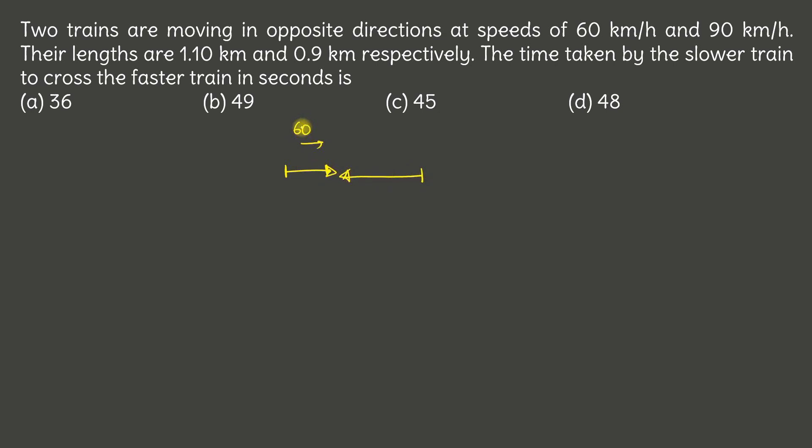One train is moving at 60 km per hour and the other at 90 km per hour. One train's length is 1.1 km and the other's length is 0.9 km. Time taken by the slower train to cross the faster train is what?